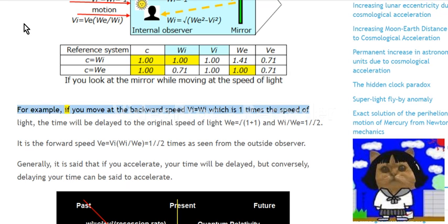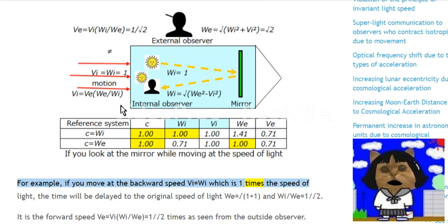For example, if you move at the backward speed v equals wi, which is 1 times the speed of light, the time will be delayed to the original speed of light, we equals square root of 1 plus 1, and wi/we equals 1 over square root 2. It is the forward speed v equals wi divided by square root 2 times as seen from the outside observer.